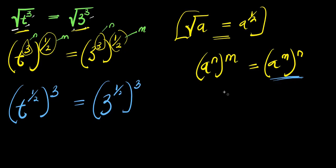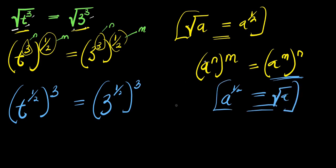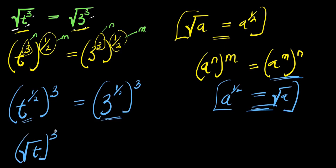Now if you have a to the power of one over two, this is just like writing the square root of a. So applying this identity, we have the square root of t, all raised to the power of three, equals the square root of three, all raised to the power of three.